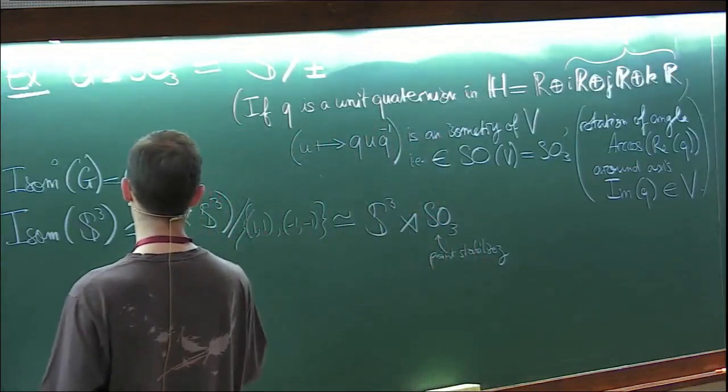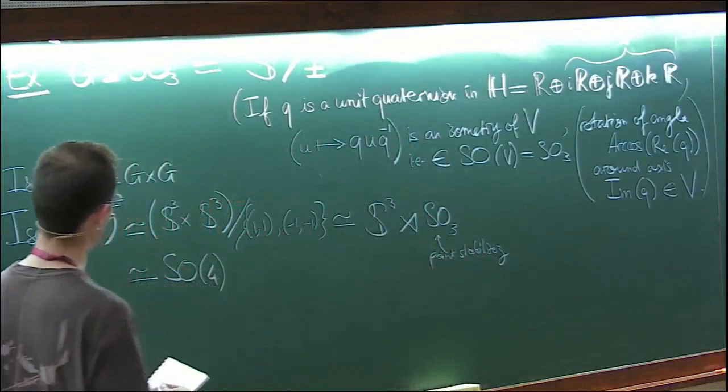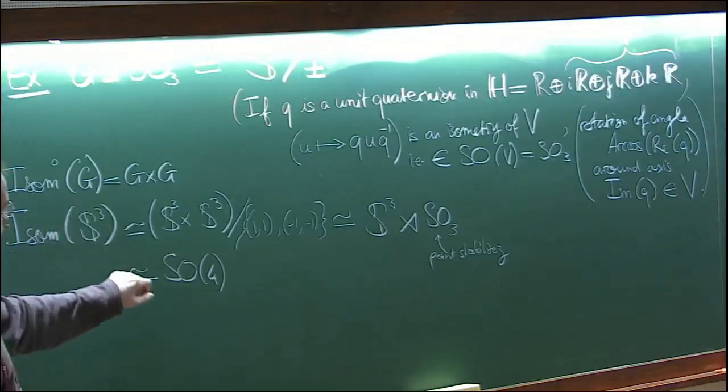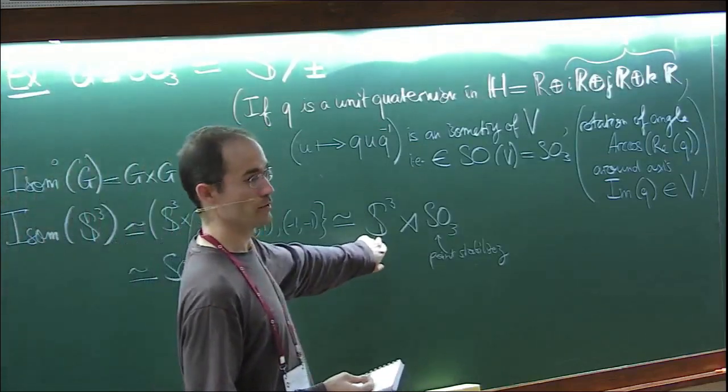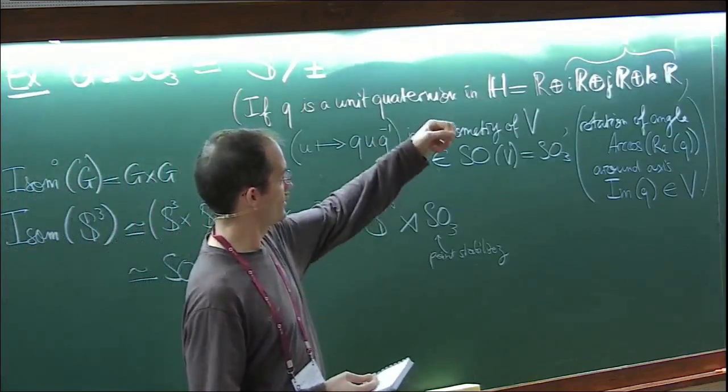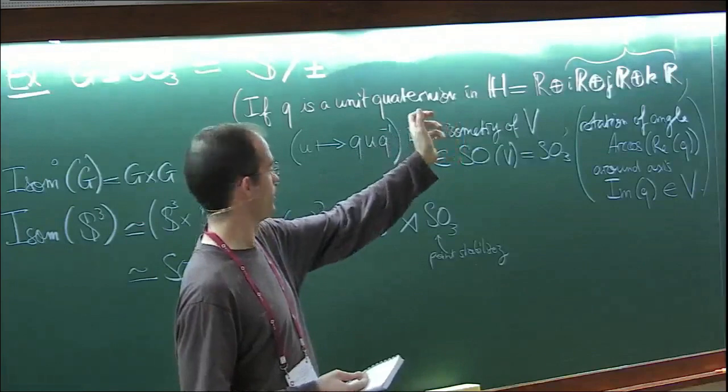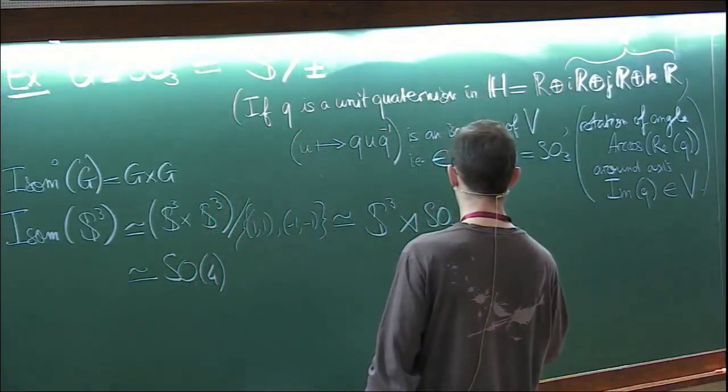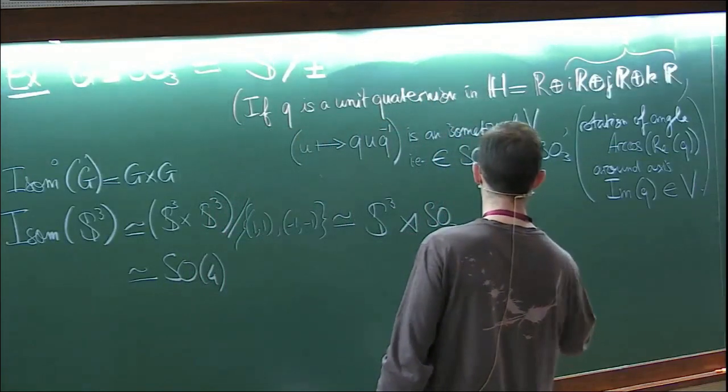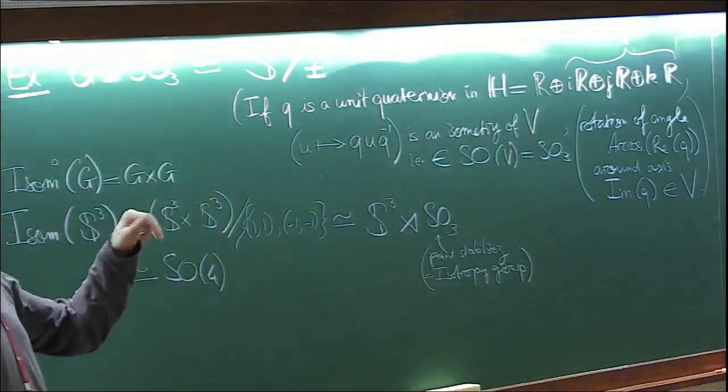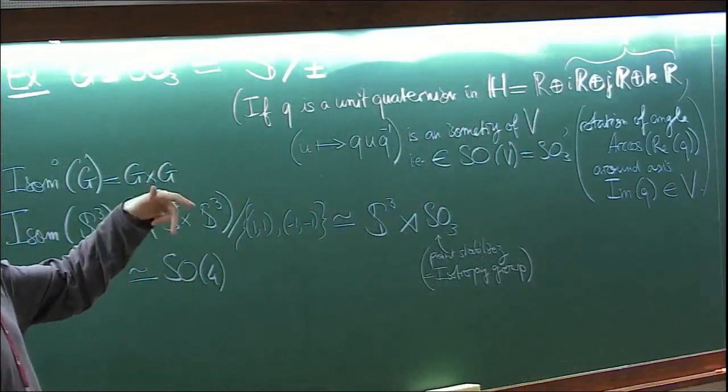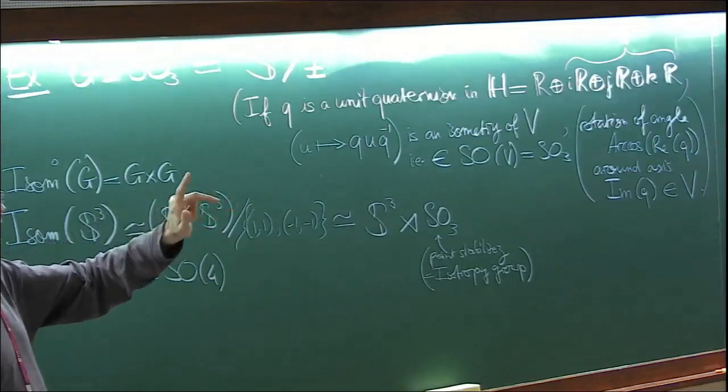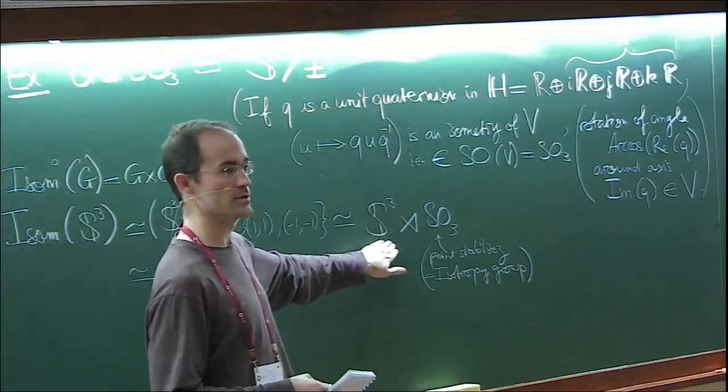It's SO(4). Another way of phrasing this is that if you have an element of S^3, it's given by where it takes the base point, one of S^3, where it takes it, and then with what orientation. You have an isotropic group. The isotropic group of S^3 is just SO(3), the stabilizer of a point - all the possible ways of changing your base frame around the base point, and then pushing the base point over by an element of S^3.